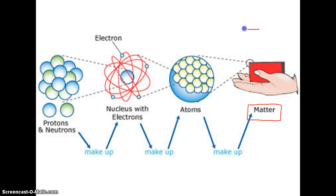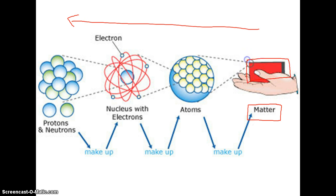If we work our way in this direction on this diagram, we'll basically be seeing what this lesson will be about for the next few minutes. Starting with matter — they're just using this example of a block in a person's hand as matter. It fits the definition: it has mass, you could take its mass on a scale, and it takes up space.